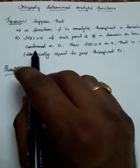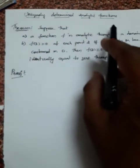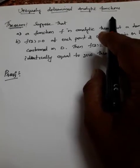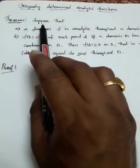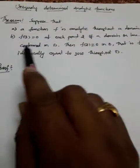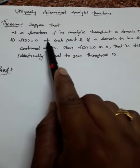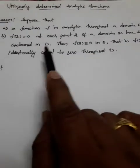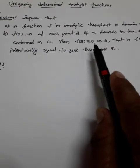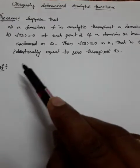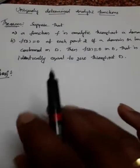Dear students, today we are going to see uniquely determined analytic functions. We will try to prove the following theorem: suppose that a function f is analytic throughout a domain D, and f(z) is zero at each point of a domain or line segment contained in D, then f(z) is identically equal to zero. This is the theorem statement we will prove.